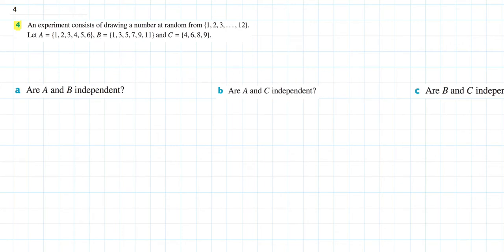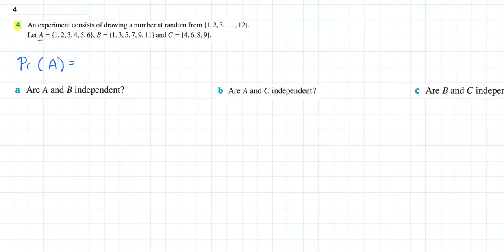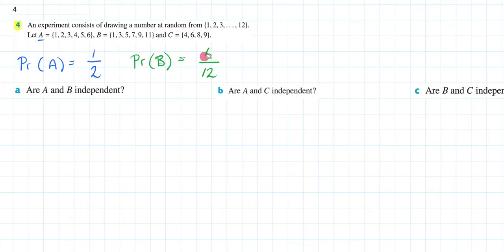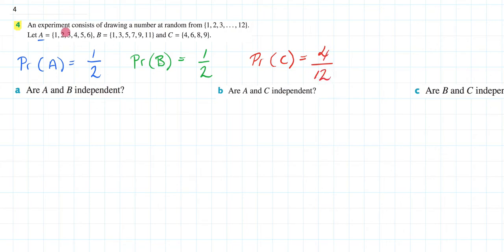Before we delve into these, let's begin by writing down the probabilities. The probability of A: there are 6 elements in the set out of a sample space of 12, so P(A) = 6/12 = 1/2. The probability of B also has 6 elements out of 12, so P(B) = 1/2. The probability of C has 4 elements out of 12, so P(C) = 1/3.